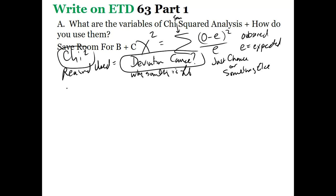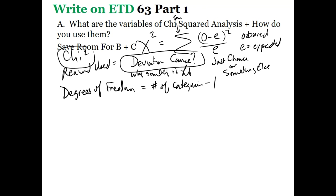Another term that matters inside chi-squared is degrees of freedom. Basically, you take the number of categories and subtract one — it's the number of other choices. So if it's a coin, there are two categories, minus one equals one degree of freedom. If I've got four different phenotypes for flies, that's three degrees of freedom. You take that and use it on a chart to find the critical value.